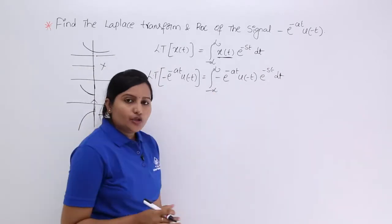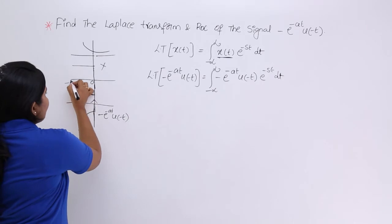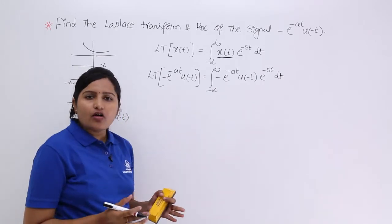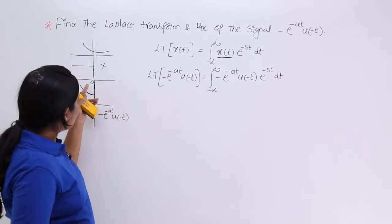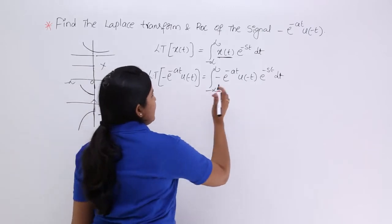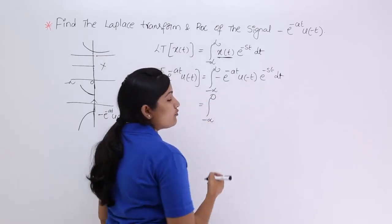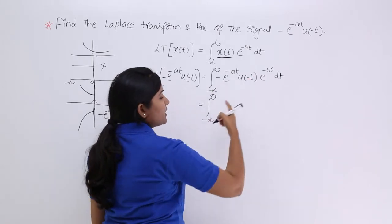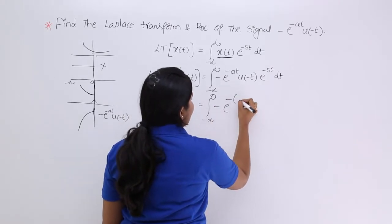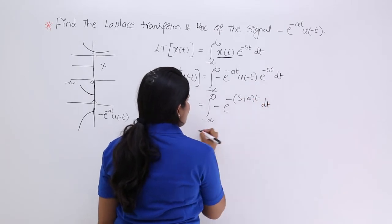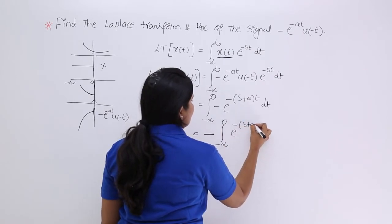We know that u of minus t is a left-sided signal: it equals 1 from minus infinity to 0, and equals 0 from 0 to infinity. So the integral limits reduce to minus infinity to 0, and the u of minus t factor becomes 1. This gives us minus the integral from minus infinity to 0 of e power minus (s plus a) t dt.